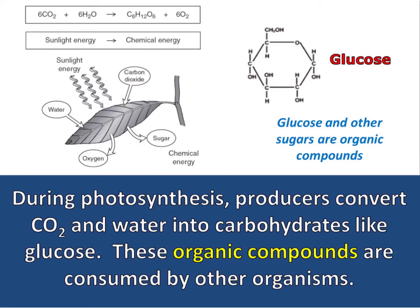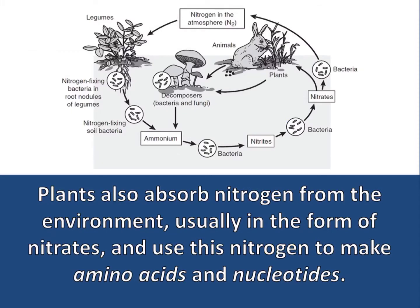During photosynthesis, producers convert carbon dioxide and water into carbohydrates like glucose. These organic compounds are consumed by other organisms. Plants also absorb nitrogen from the environment, usually in the form of nitrates, and use this nitrogen to make amino acids and nucleotides.